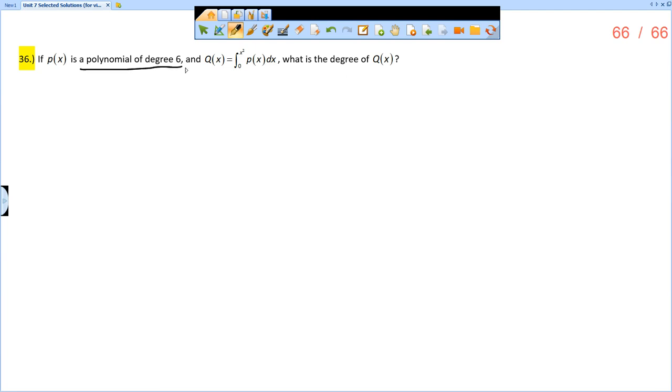Remember, a polynomial of degree 6 means it's like x⁶ plus something x⁵ plus and so on. So x⁶ is the highest power. It could have some sort of coefficient as well. But we know that P(x) is a polynomial of degree 6.